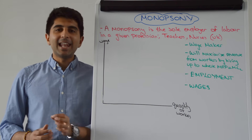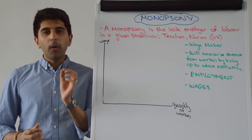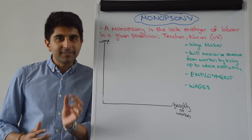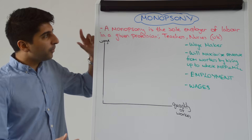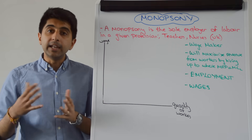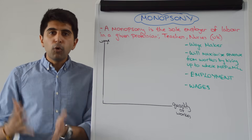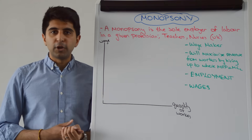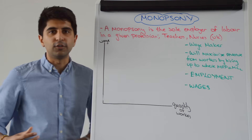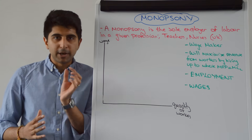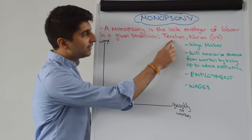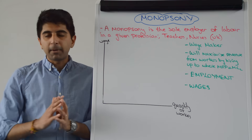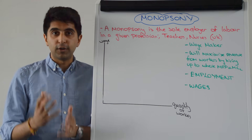Let's now look at a key labour market imperfection: what monopsonies do to efficient labour market outcomes. We need to start by understanding what a monopsony actually is. A monopsony is the sole employer of labour in a given industry. The more workers employed by one employer, the greater the monopsony power. In the UK, teachers and nurses are both employed by the state, which is by far the dominant employer in those two professions.